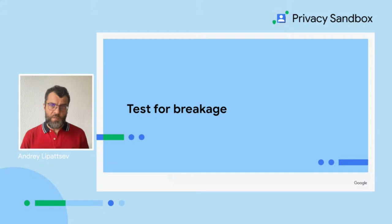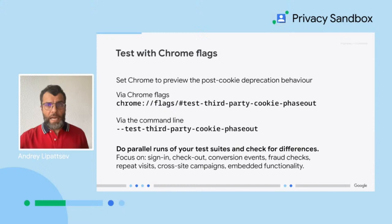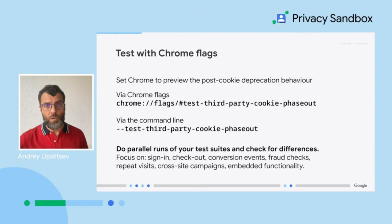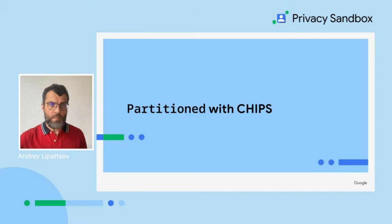Clearly by now, you must be very keen to verify if cookie deprecation affects your site or service. We have a whole detailed video on this at goo.gl/3pcd-test. In a nutshell, if you're watching a recording after full deprecation has been announced, you can simply open your site in Chrome. For now, we have a flag you can use. Test your site side by side, with and without cross-site cookies, and run through some common scenarios: account creation, login, checkout, interacting with various embeds, and so on. And if you find breakage on your site, please report it via the provided link so we at Chrome can take a look and figure out how to deal with that.